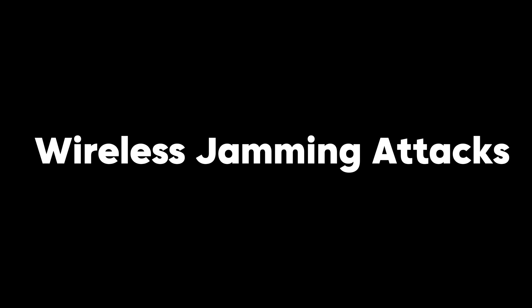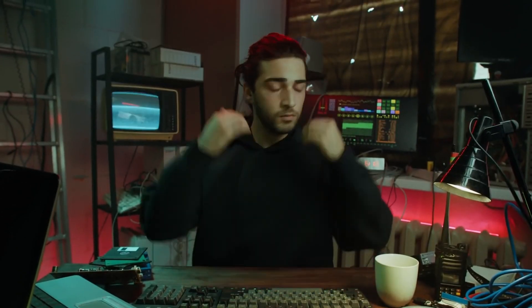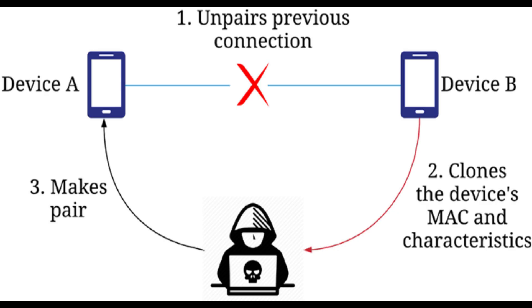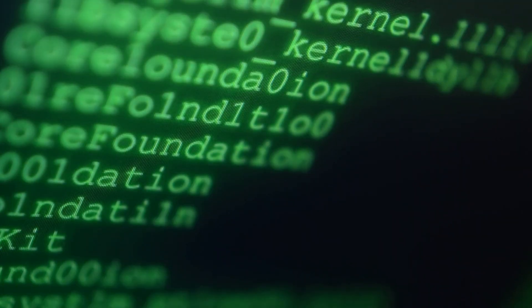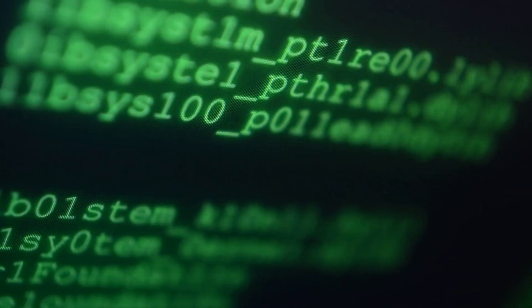Wireless jamming attacks involve sending a signal, such as white noise on the same frequency as the Wi-Fi network, trying to disrupt its operations by causing interference. These attacks can result in slower network speeds or even bring down the network entirely. In a MAC spoofing Wi-Fi attack, the attacker changes their device's media access control, or MAC address, to match a legitimate device on the network, which may allow the attacker to access the network without needing login credentials.